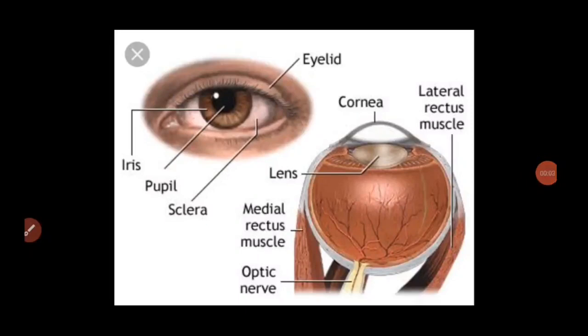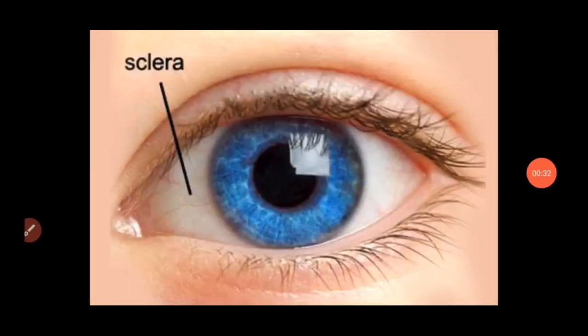Now let me explain the structure of the eye. Our eye is approximately spherical in shape with a diameter of 2.3 centimeters — that is an important point. It consists of a tough membrane called the sclera. In this picture, the white color portion is known as the sclera. The sclera is a tough membrane that protects the internal parts of the eye.